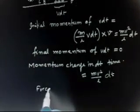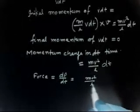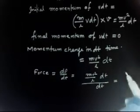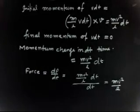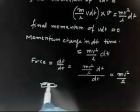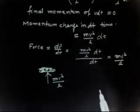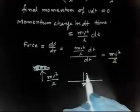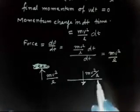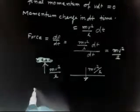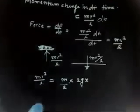The momentum change in dt time is MV²/L into dt. The force is dp/dt, so dividing by dt gives force equal to MV²/L. Substituting V = √(2gX), this becomes M into 2gX divided by L, which equals 2MgX/L. By Newton's third law, this is the force the falling chain exerts on the table.